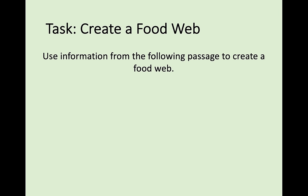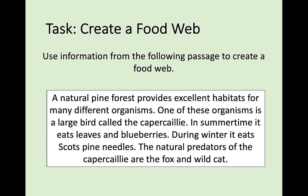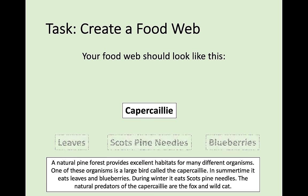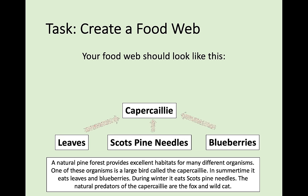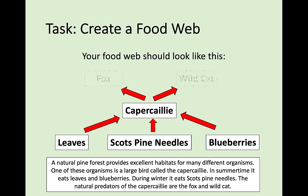An extra task: this is a scientific literacy question about a bird called a capercaillie. Create a food web purely from the information given — what the capercaillie eats and what eats it. The answer: the capercaillie eats leaves, Scots pine needles, and blueberries. However, the capercaillie is also an energy source for foxes and wildcats. From that small amount of information, you can make an entire food web.